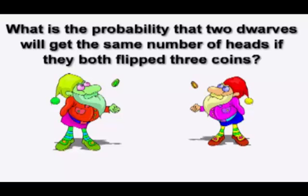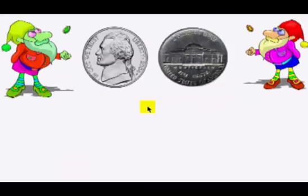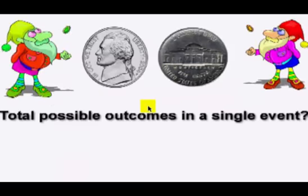These two guys are going to flip three coins apiece and get the same number of heads. To solve this problem, we need to figure out what the total possible outcomes in a single event are, and in this case it's two — it's either heads or tails.